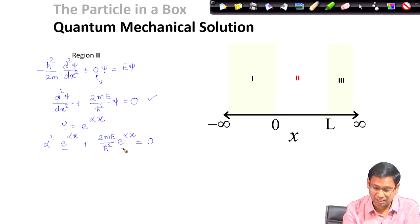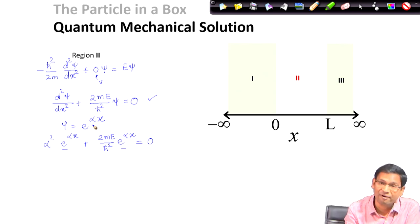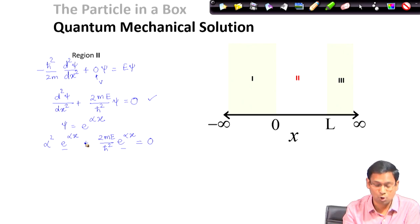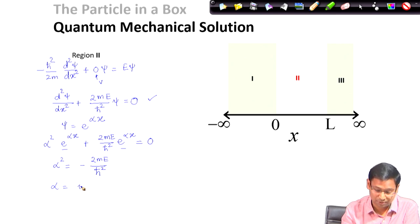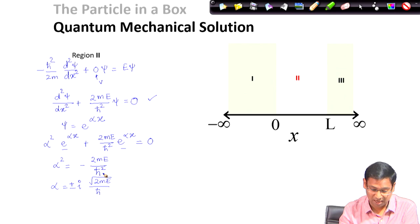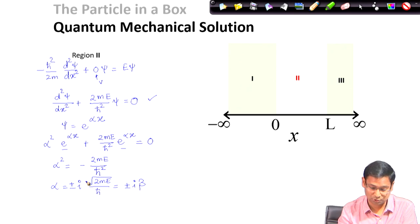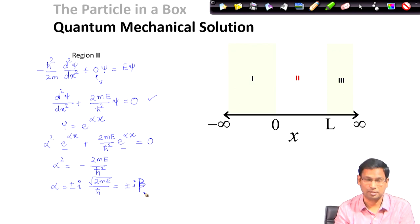Since e^(alpha x) represents the wave function and is not zero, we find the non-trivial solution: alpha squared equals minus 2mE / h-bar squared, so alpha equals plus or minus i times the square root of 2mE / h-bar. I define beta as the square root of 2mE / h-bar for notational simplification. So there are two possible values of alpha: i·beta and minus i·beta.